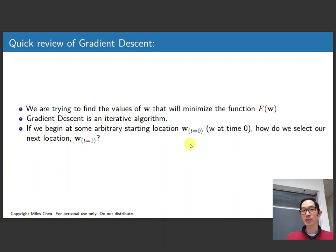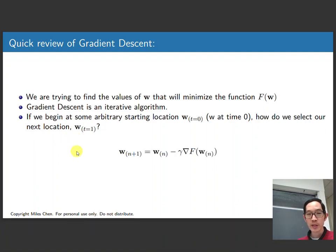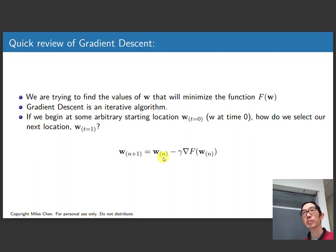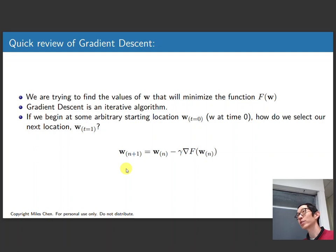So the question is: if we start at some location w at time t0, how do we select our next location w at time t equals 1? The answer is you take w at your current location and subtract gamma times nabla f, the gradient of the function at your current location of w. Basically we're taking a step backwards — we look at which way is uphill and take a step backwards, and that gets us closer downhill. We just keep doing this over and over again, taking steps in the opposite direction of uphill, so we're going downhill.